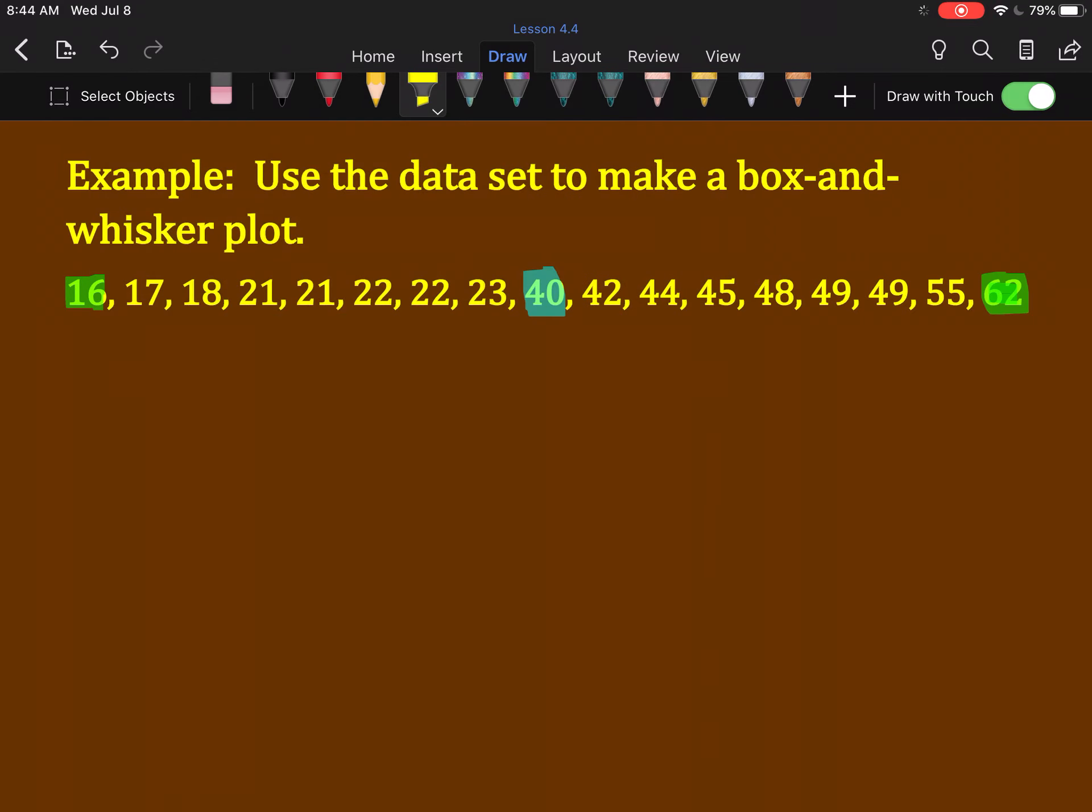Now, for those eight numbers below 40, the first quartile, 8 divided by 2 is 4, will be in between the fourth and fifth numbers. It's right here. So, what's between 21 and 21? 21.